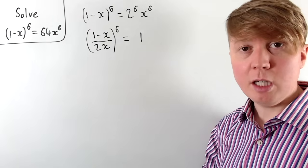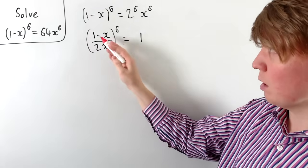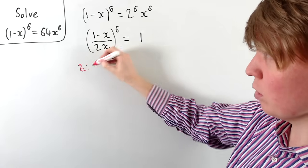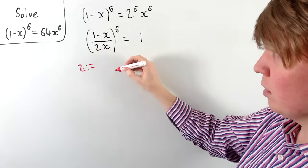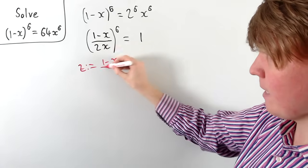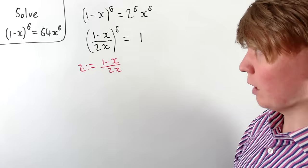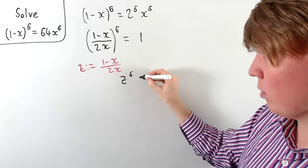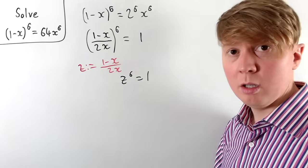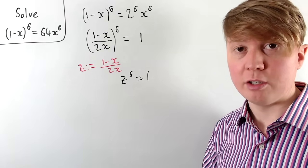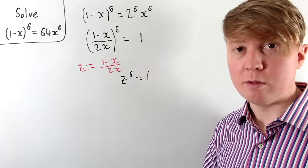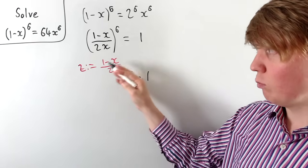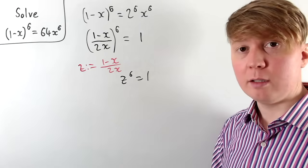To make this even nicer to work with, we replace (1 minus x)/(2x) with a new variable z, defined as z equals (1 minus x)/(2x). Our equation then simply becomes z to the power of 6 equals 1, which we can solve using our knowledge of complex roots of unity. Once we have our values of z, we rearrange to find our x values.